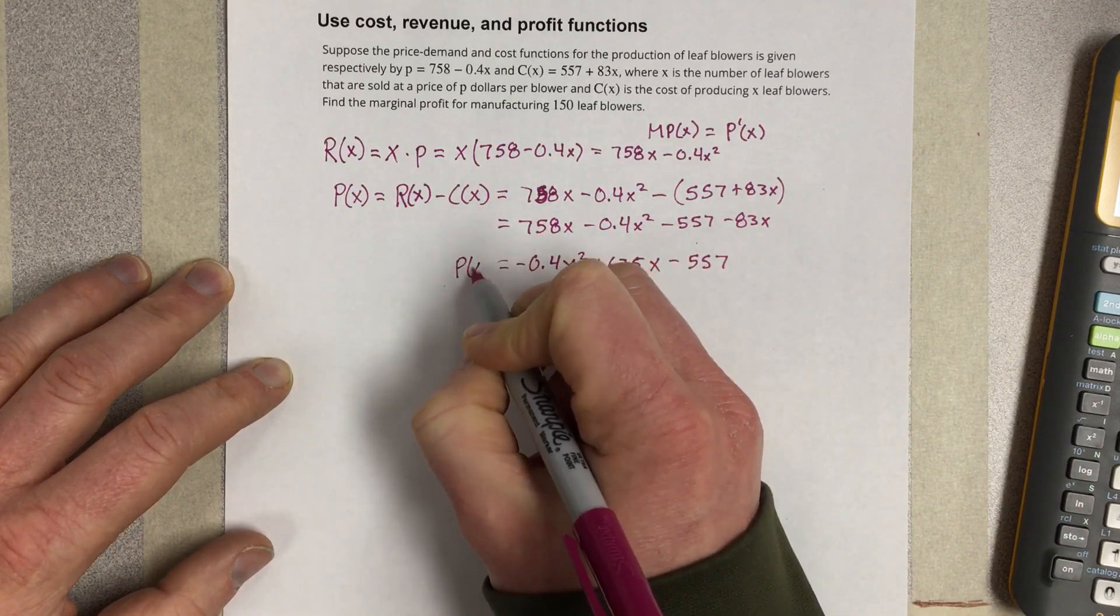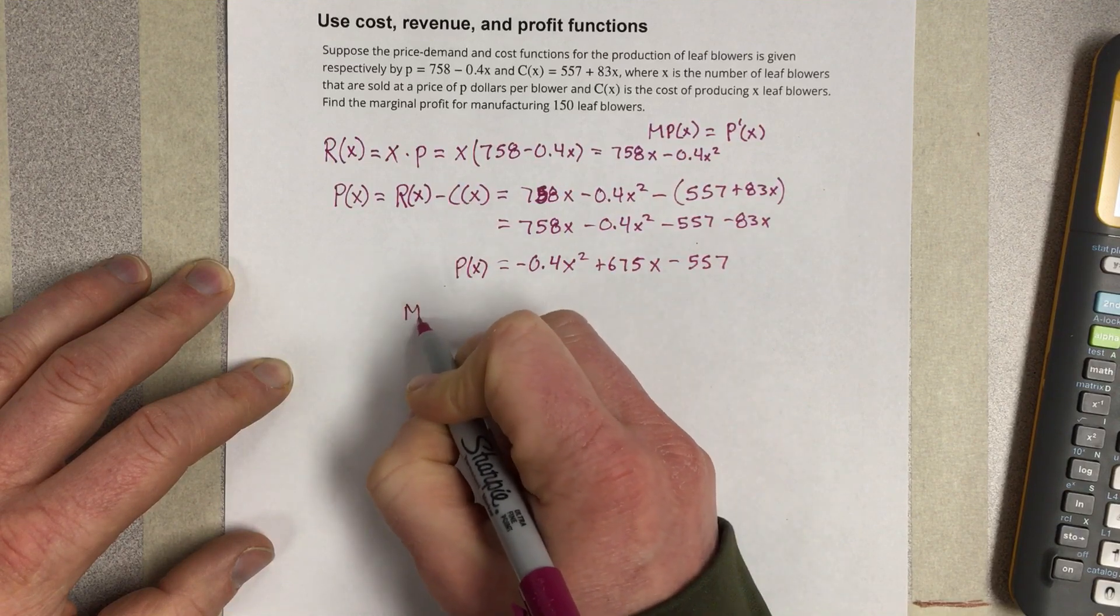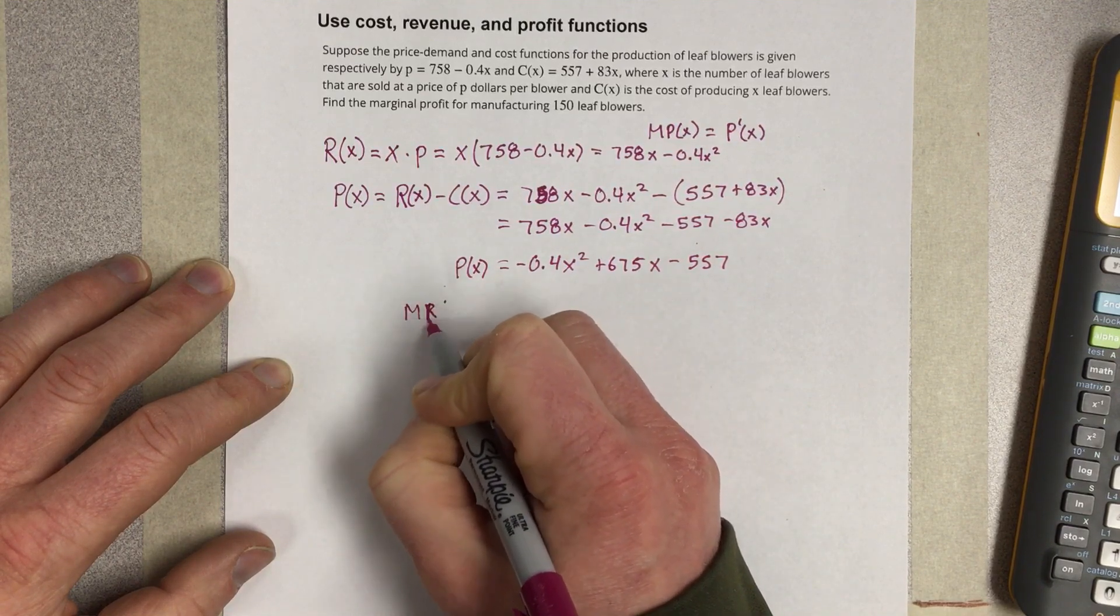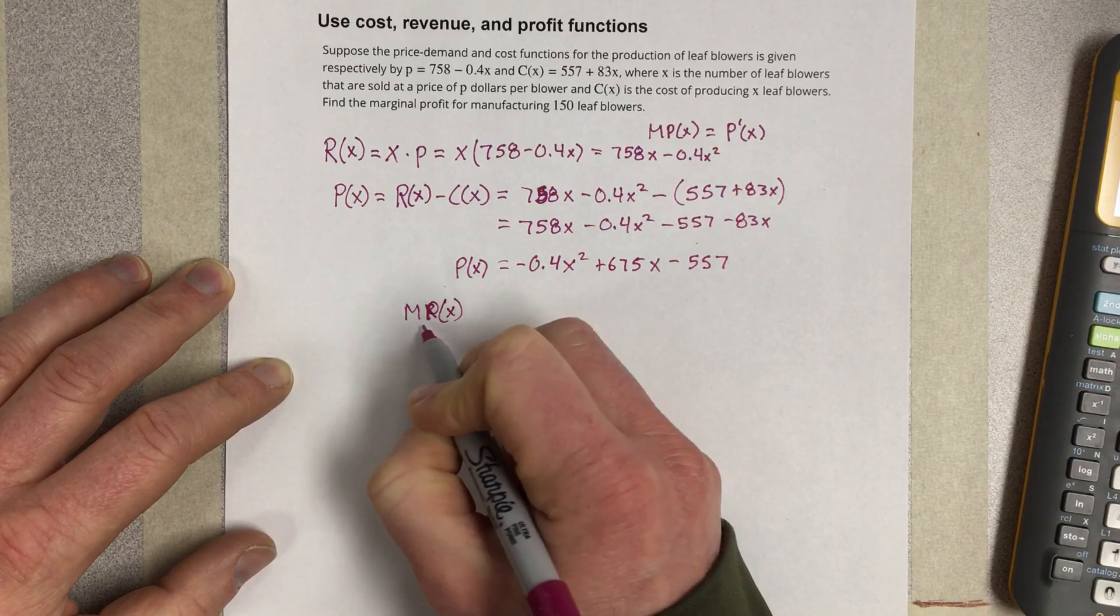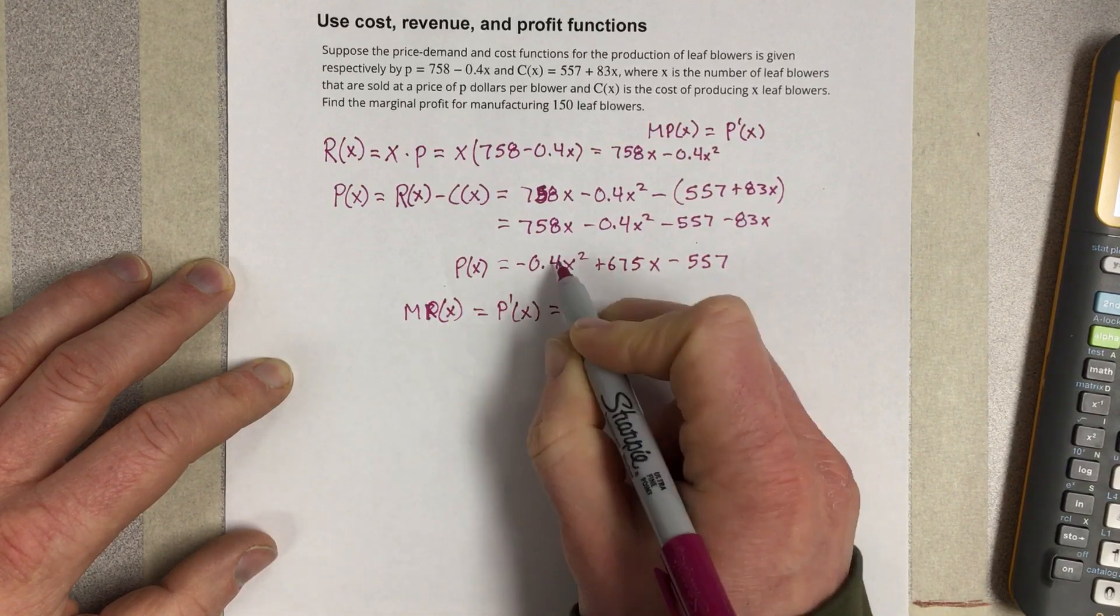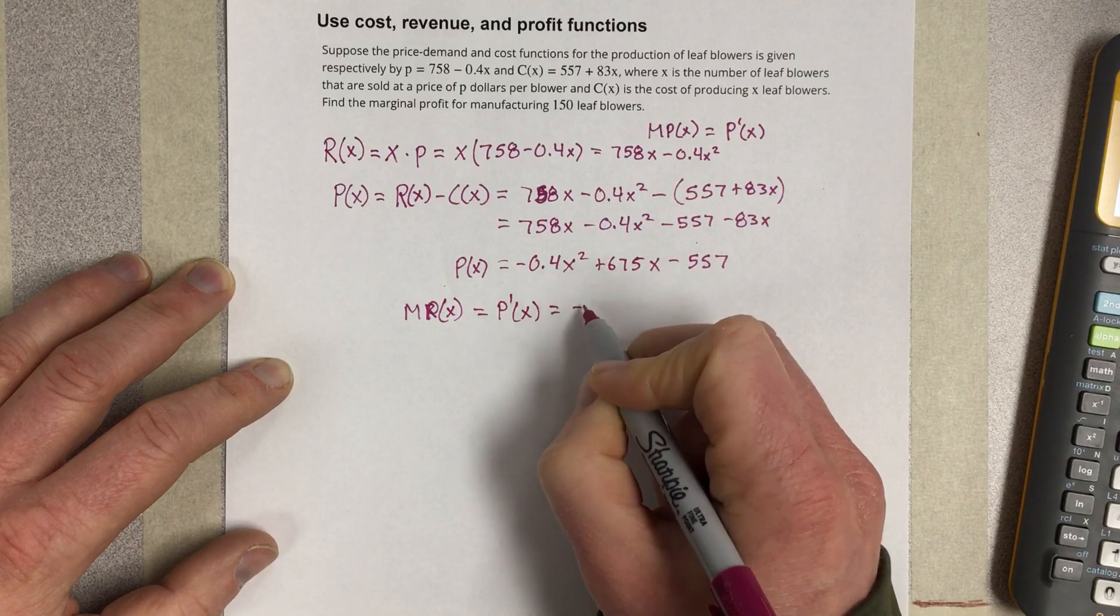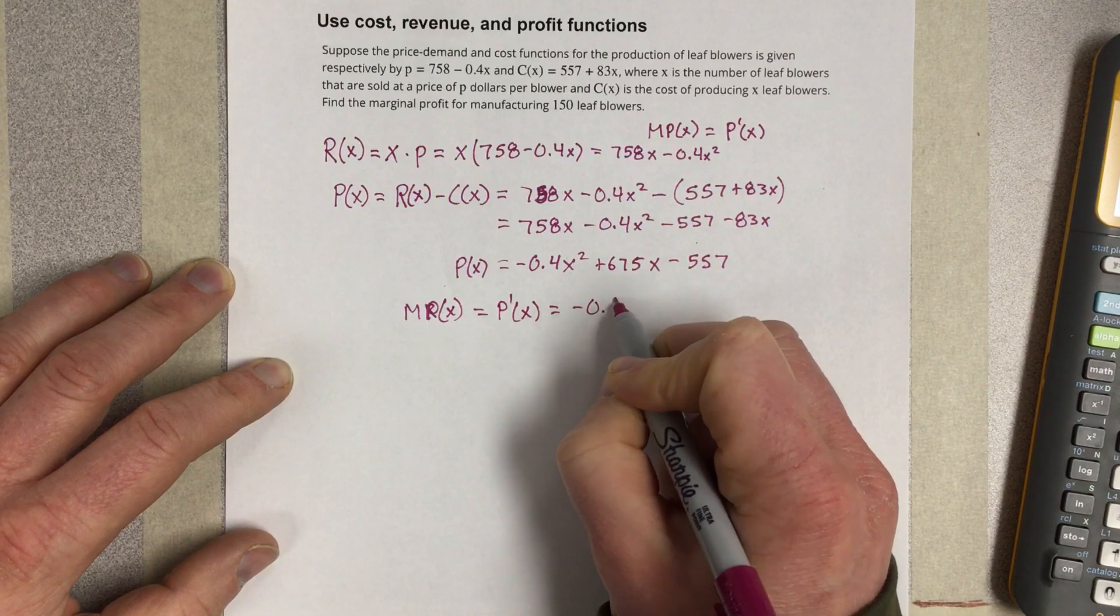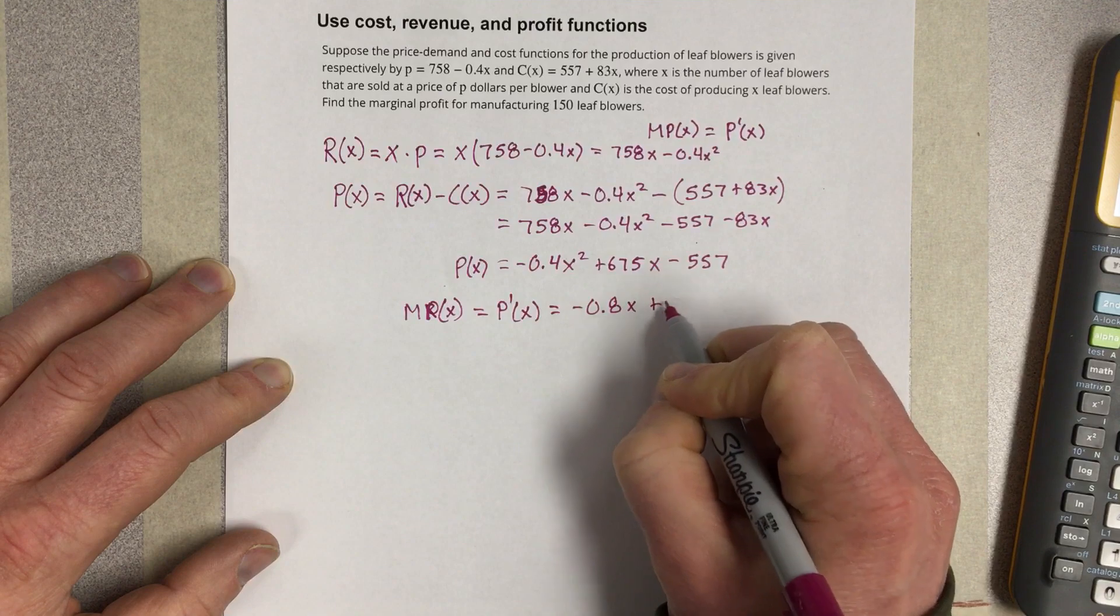Now, we know we need to take the derivative of the profit equation to find the marginal profit. So marginal profit is equal to the derivative of the profit equation. If I take this derivative, I get negative 0.8x plus 675.